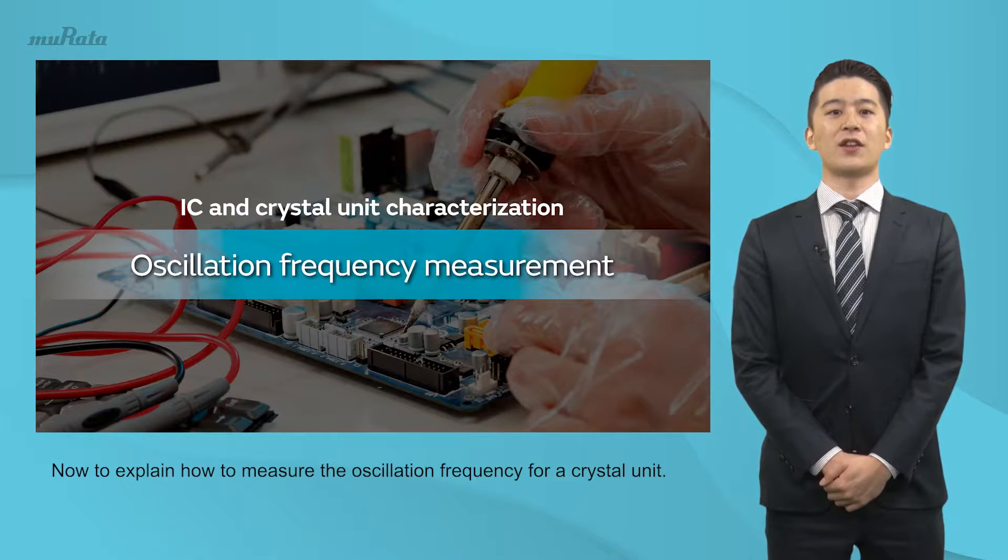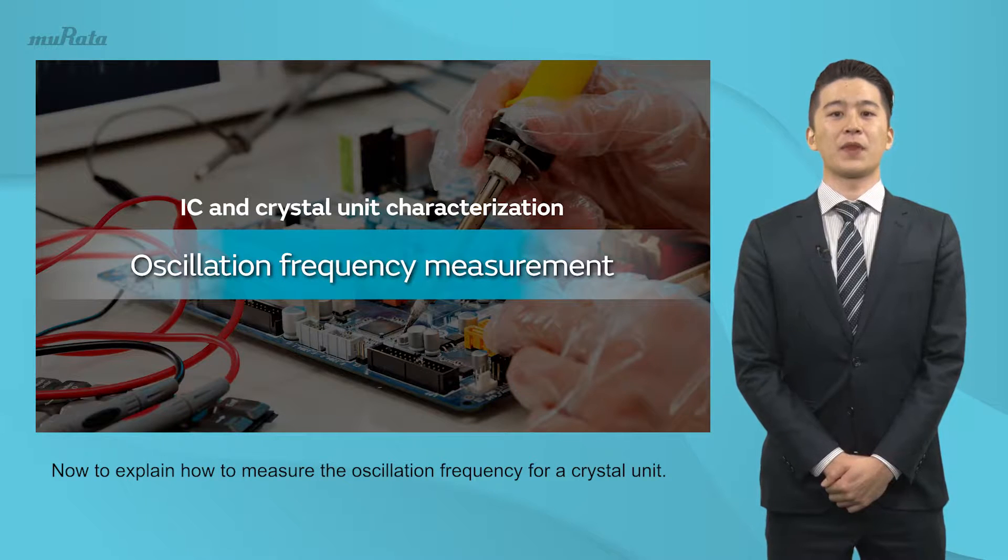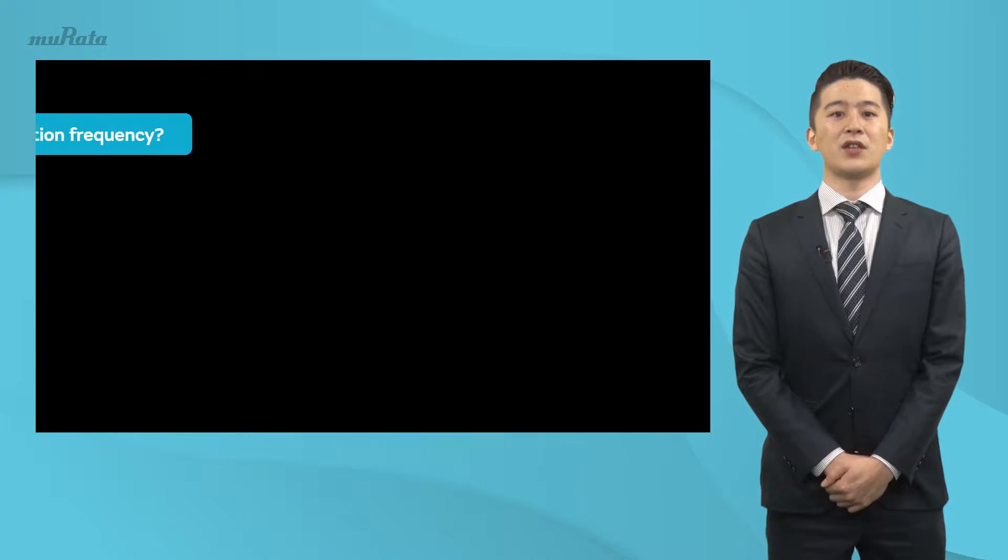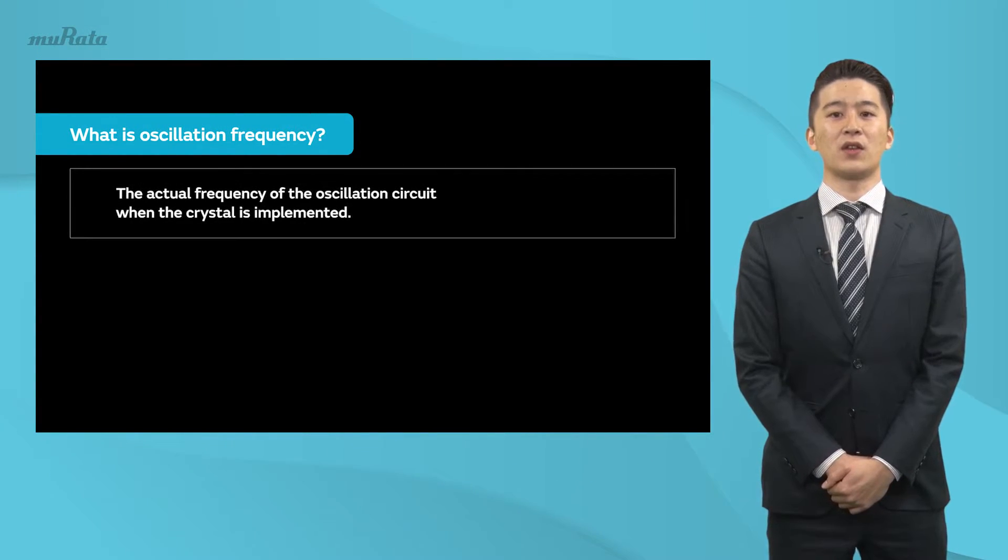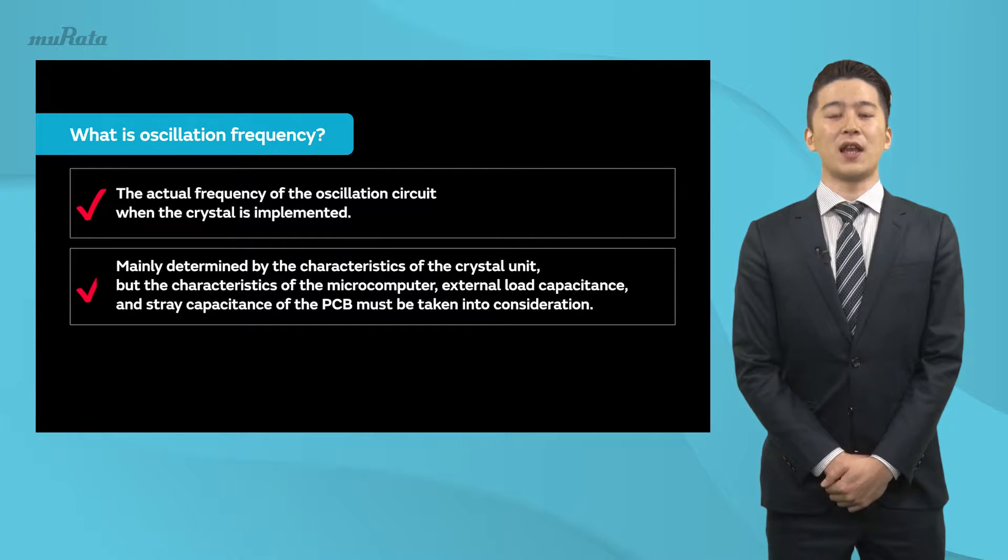Now to explain how to measure the oscillation frequency for a crystal unit. Oscillation frequency refers to the actual frequency of the oscillation circuit when the crystal is implemented. The oscillation frequency is mainly determined by the characteristics of the crystal unit, but the characteristics of the microcomputer, external load capacitance, and stray capacitance of the PCB must be taken into consideration to determine the actual oscillation frequency.